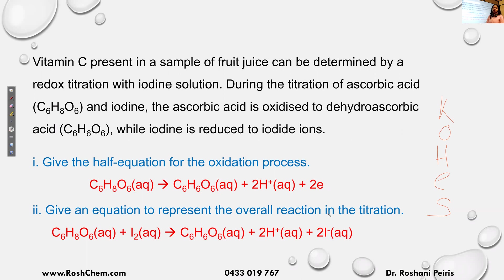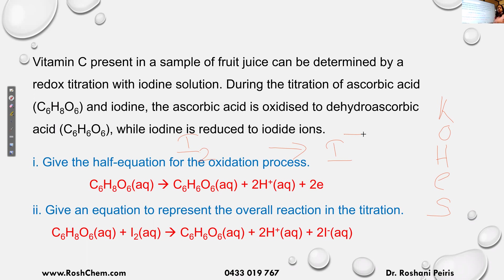To get the overall equation, I need to know the reduction. The question says iodine is reduced to iodide ions. Iodine is I₂, going to I⁻. You have two iodines, so put two in front of I⁻. The left side charge is zero, the right side is two minus, so you want two electrons on the left side. That is my reduction half equation. Now add the oxidation and reduction together — the electrons cancel, because you have two electrons on the right and two on the left.